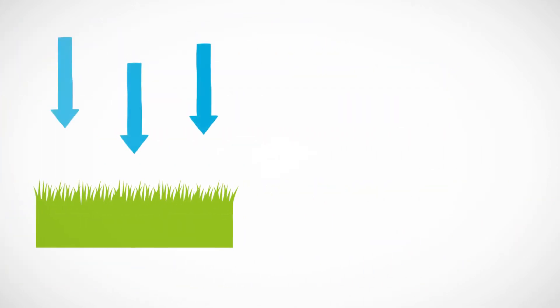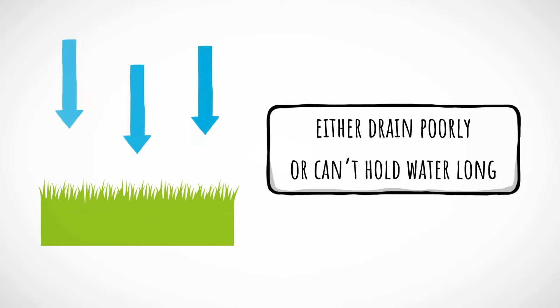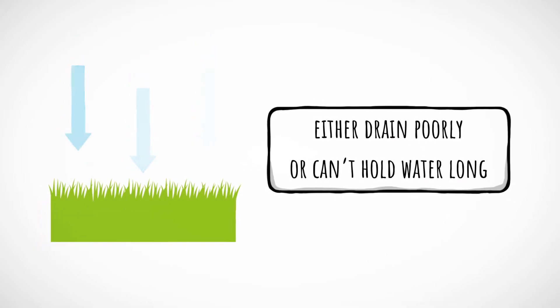Since the irrigation occurs from above, they either drain poorly or can't hold water long, requiring frequent irrigation.